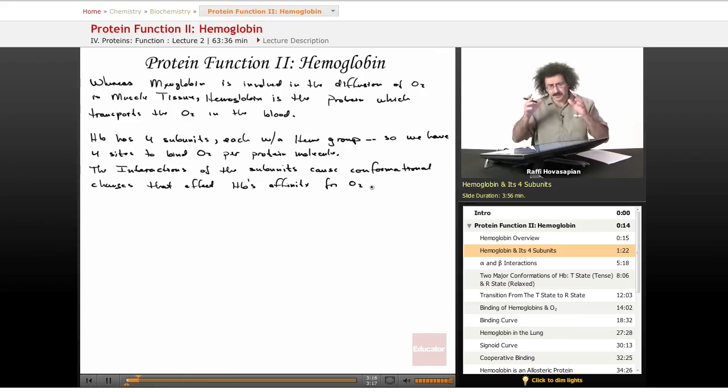We need to bind the O2 tightly, take it to another part of the body to the tissues, and be able to release it. We need that flexibility because the oxygen concentration in the lungs is different from the tissues. We need that high degree of flexibility based on different concentrations of O2, and since it's a gas, we're talking about different partial pressures of O2.